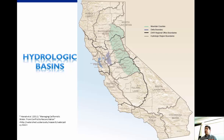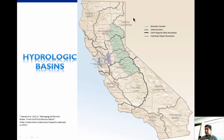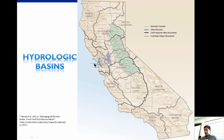We have 10 hydrologic basins. Remember what a basin is? A basin is an area where if a drop of rain falls, it will move from whatever part of the watershed into the streams, and from that stream out to the different water bodies, which usually is the sea.